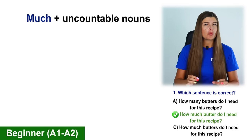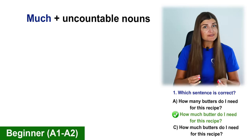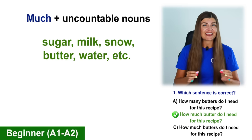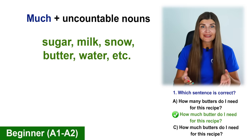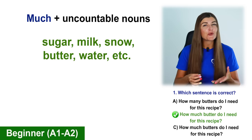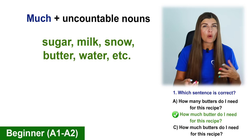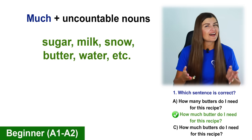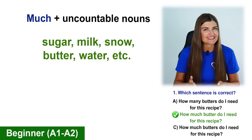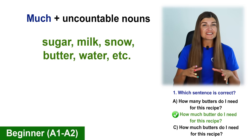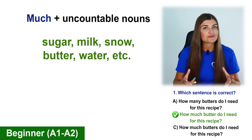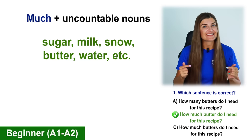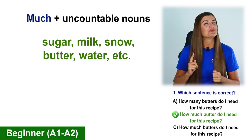We use much with uncountable nouns like sugar, milk, snow, butter, water and other products. I'm going to explain this rule later in this video so please keep watching.